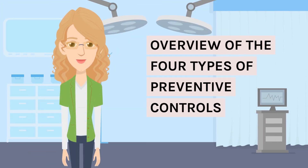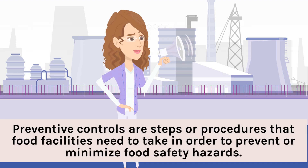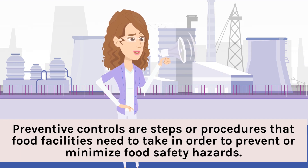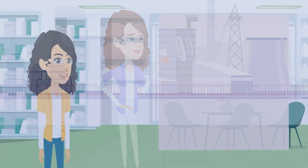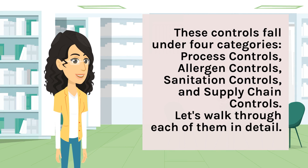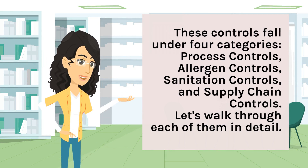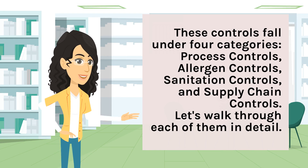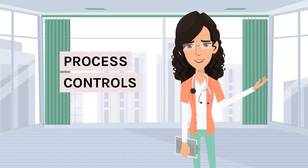Overview of the four types of preventive controls: Preventive controls are steps or procedures that food facilities need to take in order to prevent or minimize food safety hazards. These controls fall under four categories: process controls, allergen controls, sanitation controls, and supply chain controls. Let's walk through each of them in detail.